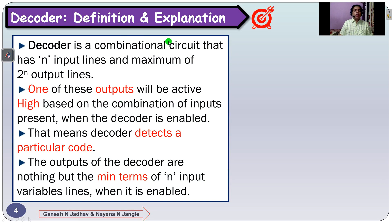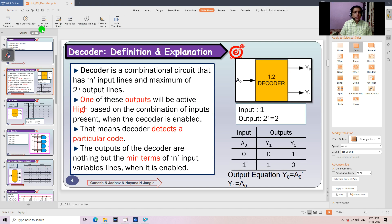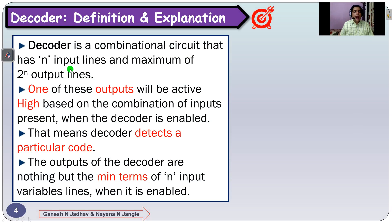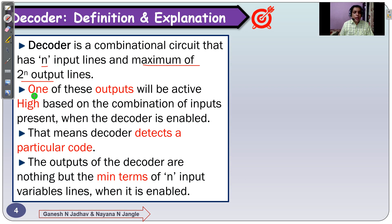A decoder is a combinational circuit that has N input lines and 2 raised to N output lines. If you observe, there are N inputs and 2 raised to N output lines. Maximum 2 raised to N outputs — one of these output lines will be active high based on the combination of inputs. One of the output lines is high depending upon the combination of the input present.